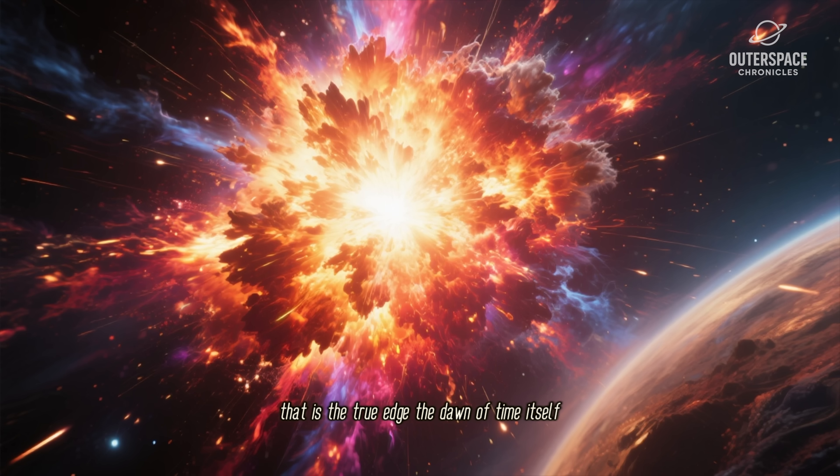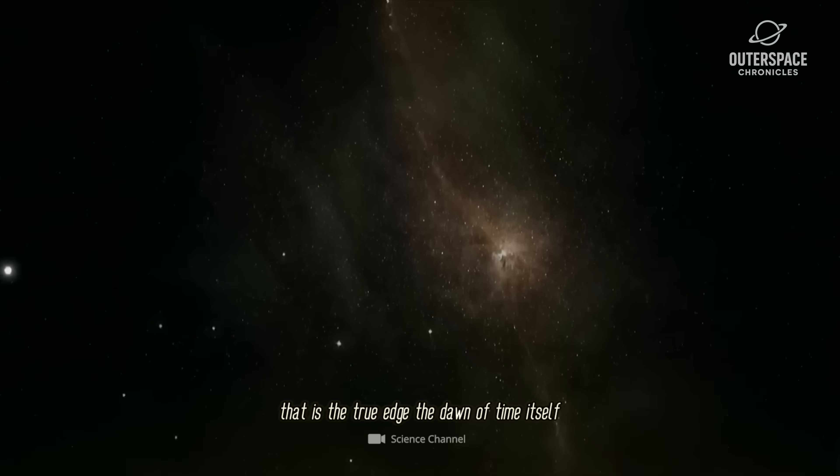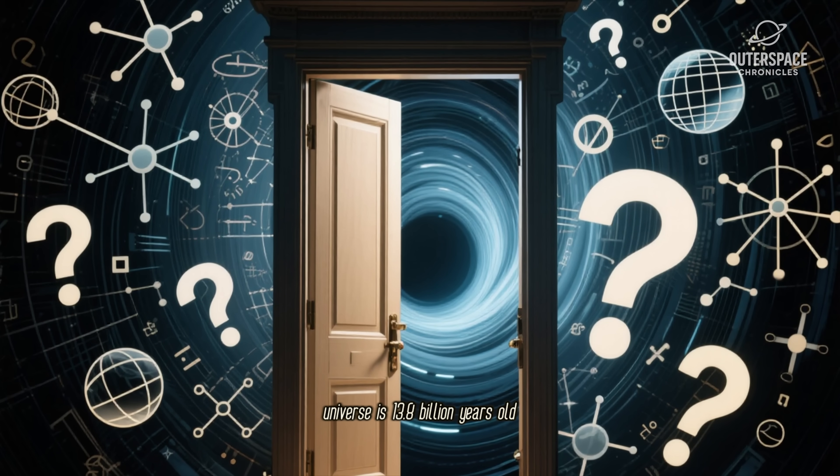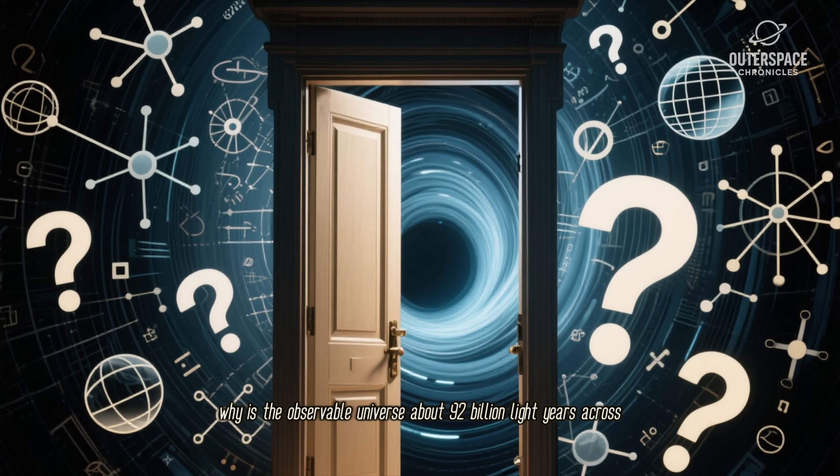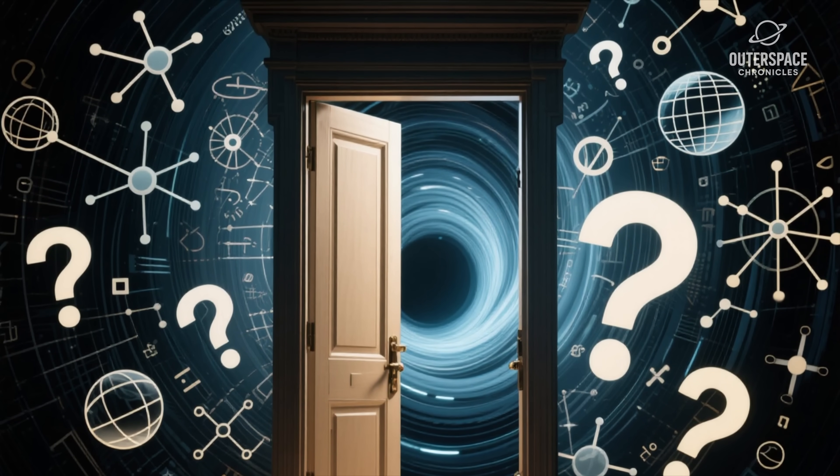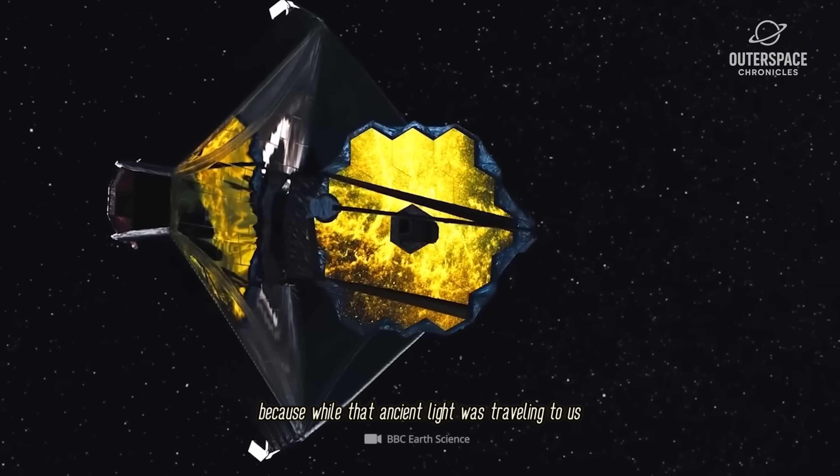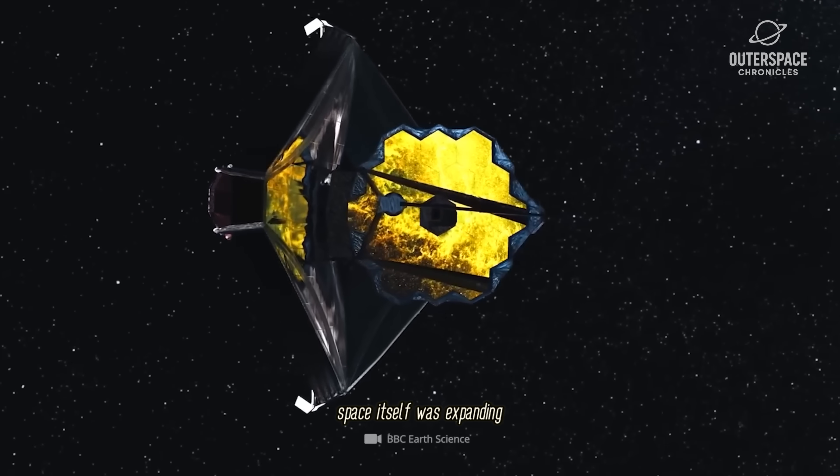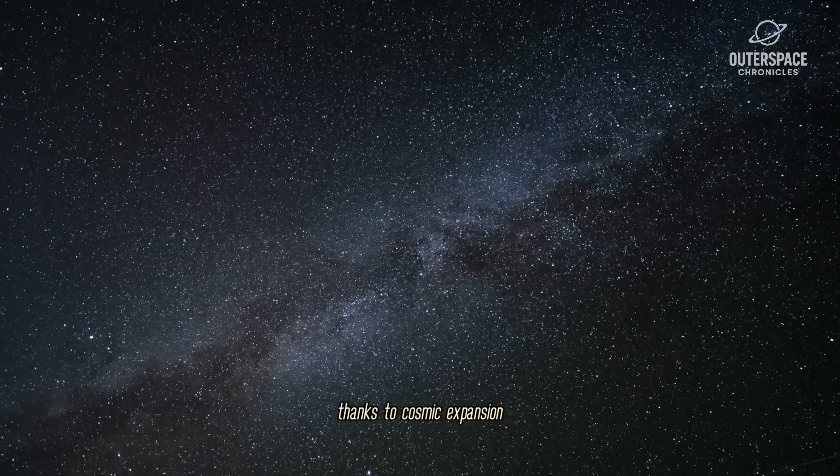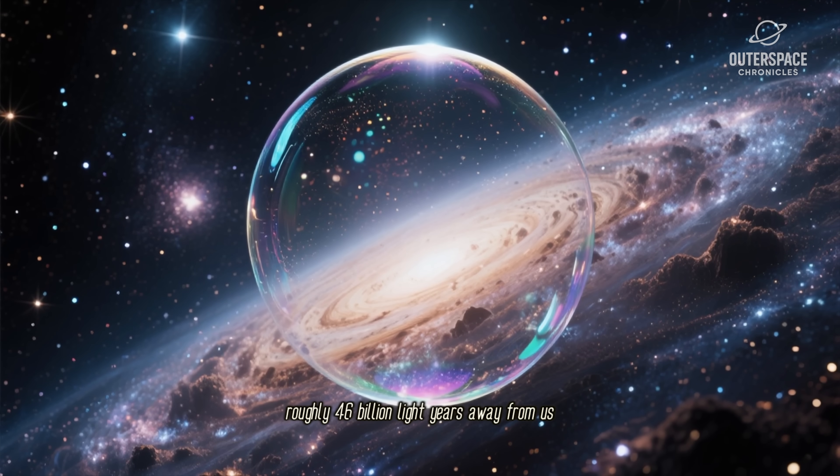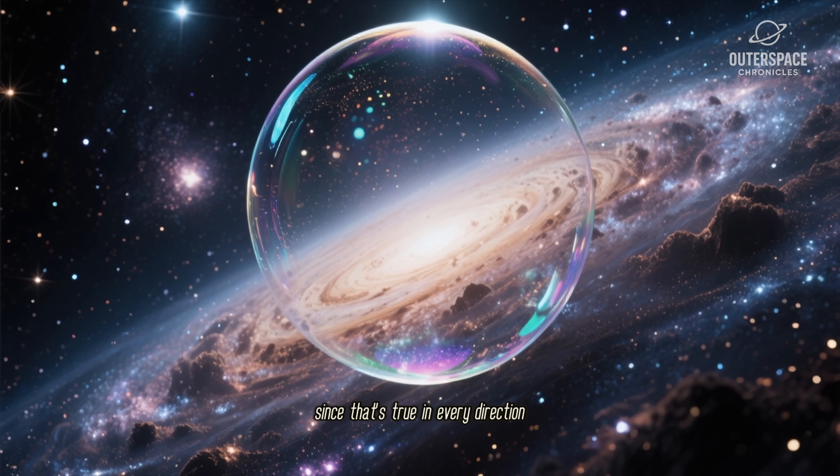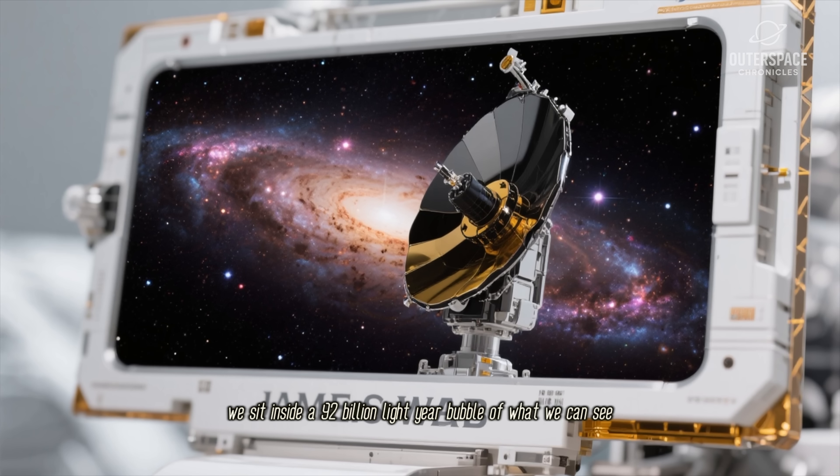This also solves a cosmic riddle: if the universe is 13.8 billion years old, why is the observable universe about 92 billion light-years across? Because while that ancient light was traveling to us, space itself was expanding. The galaxy that sent that light is now, thanks to cosmic expansion, roughly 46 billion light-years away from us. Since that's true in every direction, we sit inside a 92 billion light-year bubble of what we can see.